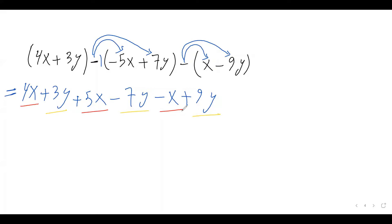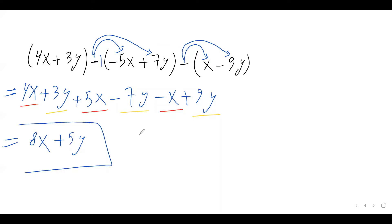So let's combine them. 4x plus 5x is positive 9x, and then minus x gives positive 8x. Then we have 3y minus 7y, that's negative 4y, and then negative 4y plus 9y is positive 5y. So this is our simplified version of this expression.